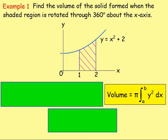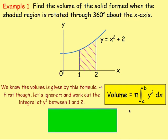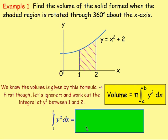Example one: Find the volume of the solid formed when the shaded region is rotated through 360 degrees about the x-axis. So you can see here, we've got the curve y equals x squared plus 2. The region is enclosed between x equals 1 and x equals 2. And we can find out the volume using this formula. However, before we jump into using that formula, what I'm going to do is ignore pi first of all and just integrate y squared between 1 and 2.